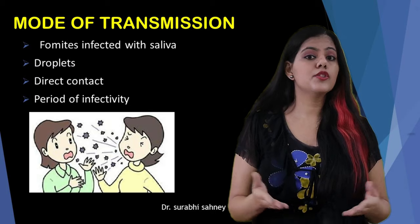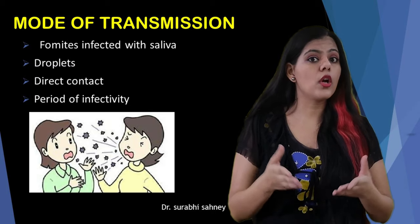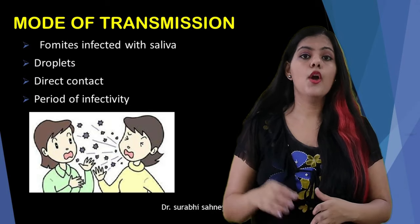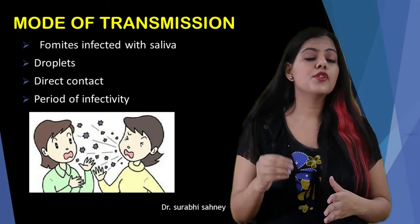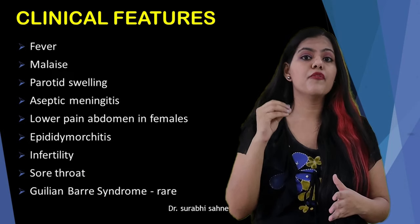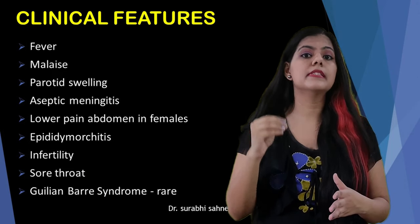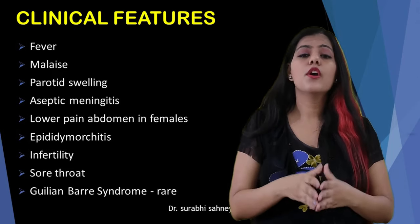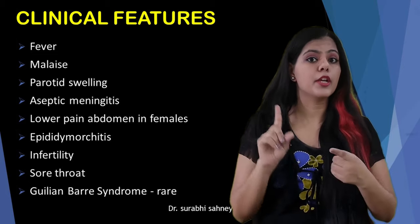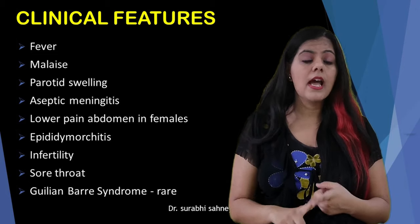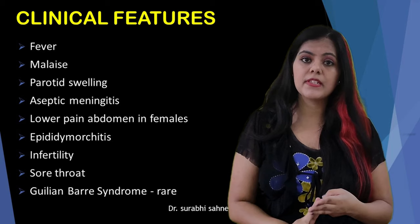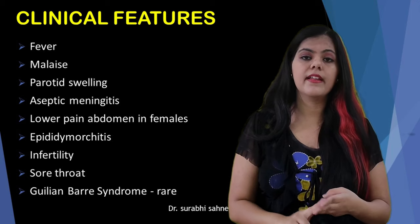The second method is through direct contact. The third method is through fomites — objects already infected with saliva — such as your clothes, utensils, or furniture that you personally use.